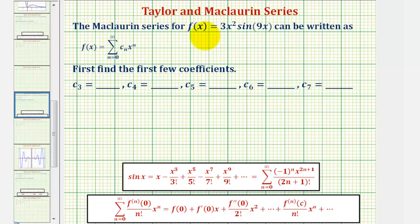We want to find the Maclaurin series for f(x) = 3x² times sin(9x), which can be written in a summation form. We're asked to find the first few coefficients, c₃ through c₇. Because we're looking for a Maclaurin series, we know the series is centered at x equals 0.